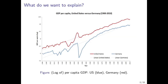Before we start, it's important to know what the growth model of Solow and Swan aims to explain. I present here some of the stylized facts of economic growth that basically need an explanation. What we see here is the development of the United States and of Germany in terms of per capita GDP over the 20th century and the beginning of the 21st century. Per capita GDP is presented here in logarithms. The red line refers to the United States and the blue line to Germany.